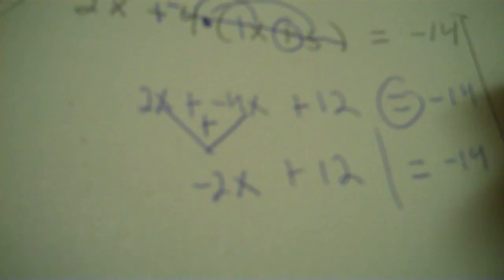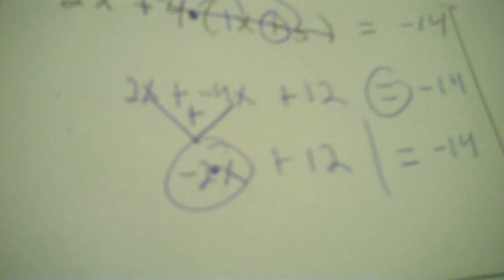Then plus 12. Now you're set up for a two-step — you've got times and plus. So take out the plus. Negative 14 minus 12 is negative 26. Negative 2 dot x. Then you divide each side by negative 2. And that's 13.